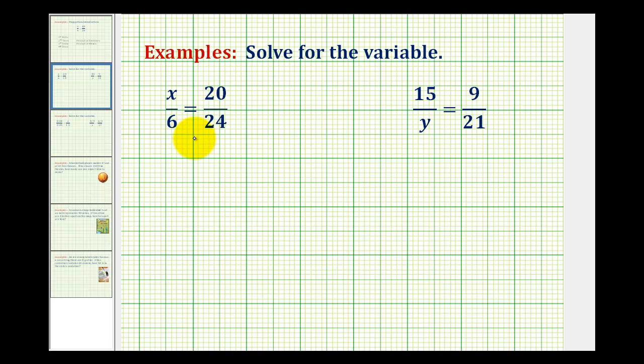To solve for the variable in the proportions, we can use the fact that the product of the extremes must equal the product of the means, or that the cross products must be equal.